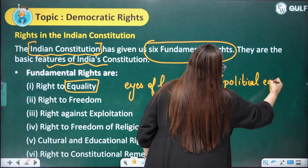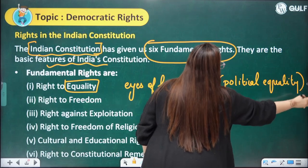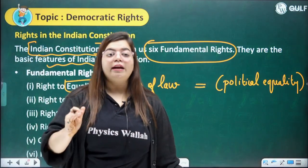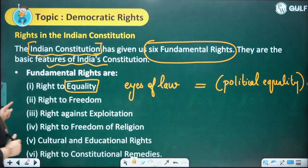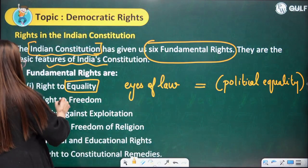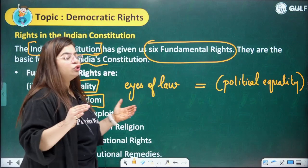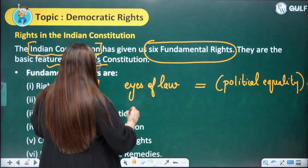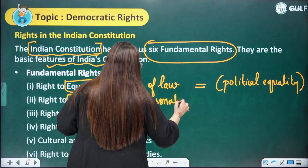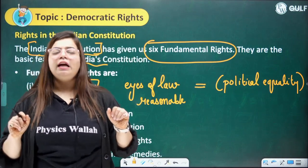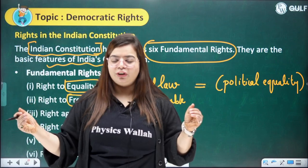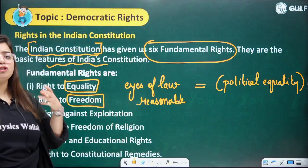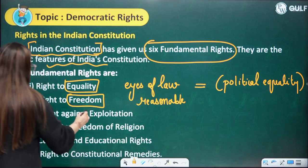Political equality means that by universal adult franchise — that is, 18 years and above — you are given equal rights to vote for a particular government. The second is Right to Freedom: you are free to choose your own religion and express your thoughts and ideas, but that should be reasonable. For example, you cannot carry arms and armaments in an open area — that is unreasonable. Reasonable freedom means the right to express your views and thoughts.